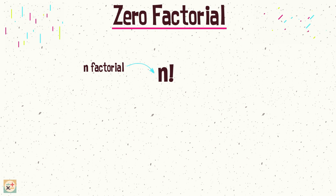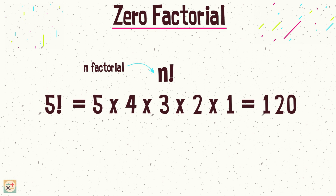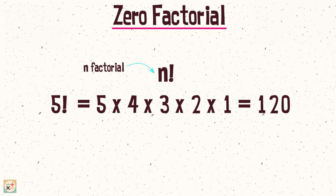For example, 5 factorial is equal to 5 times 4 times 3 times 2 times 1, which is 120.